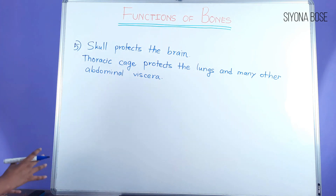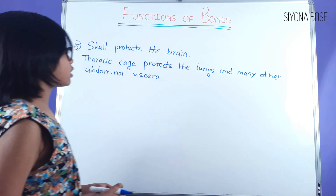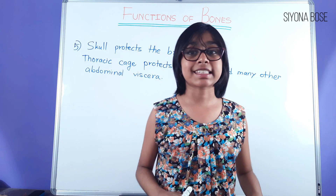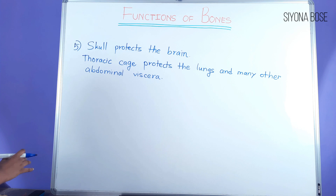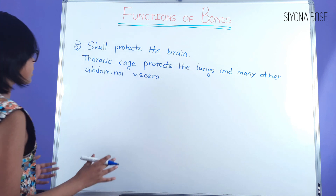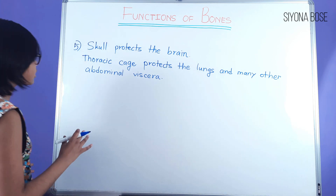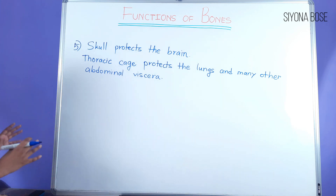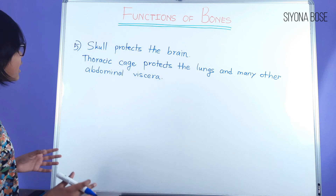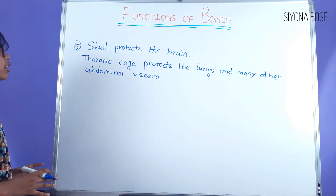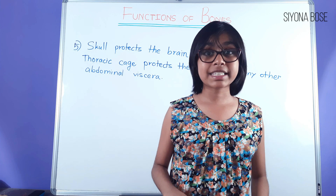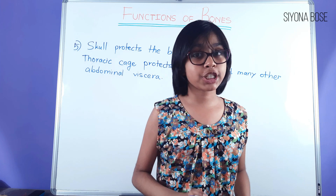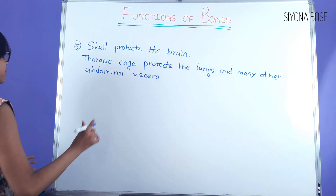Viscera refers to big and important organs — like the liver, the stomach, and so on. The thoracic cage doesn't extend to the stomach, but it does protect the lungs and many other abdominal viscera. So another function of bones is protection of many internal organs.